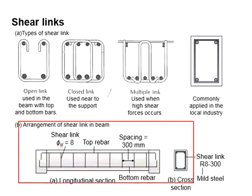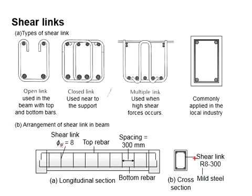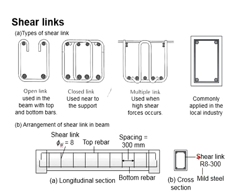This diagram shows the arrangement of a shear link in a beam. The specification of a shear link is normally written as R, the bar size, and the spacing. For example, R8-300: the alphabet R refers to mild steel, 8 means the size of the shear link is 8mm, and 300 means the spacing of shear link center to center is 300mm.